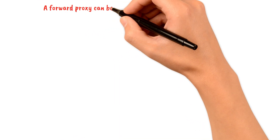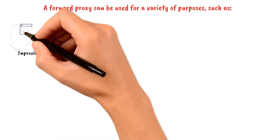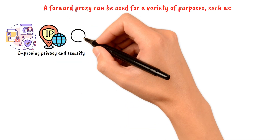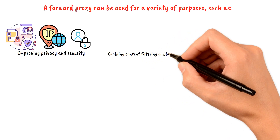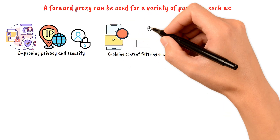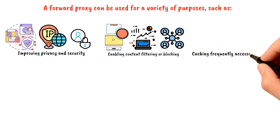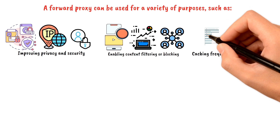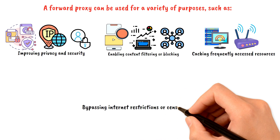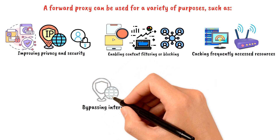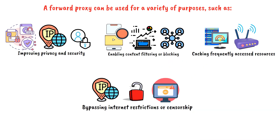A forward proxy can be used for a variety of purposes, such as improving privacy and security by hiding the client's IP address and other identifying information from the internet, enabling content filtering or blocking as the forward proxy can inspect and modify internet traffic before forwarding it to the client, caching frequently accessed resources to improve performance and reduce bandwidth usage, and bypassing internet restrictions or censorship by providing the client with an IP address from a different location.